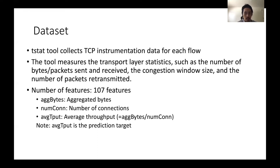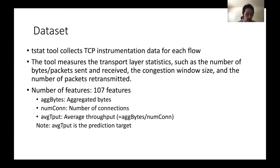This dataset includes incoming and outgoing data, but we only utilize the incoming data because we are more interested in downloading from the source. This dataset has 107 features, so we extract three features for our prediction: aggregated bytes, number of connections, and average throughput.